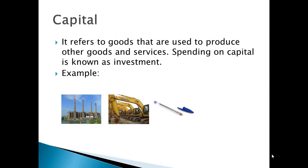Capital refers to goods that are used to produce other goods and services. Spending on capital is known as investment. If you don't know what a good is, it's just anything that you can touch. Services are intangible — you can't touch them — and this is what people deliver. For example, a sales clerk will sell you the product; they are providing the service.